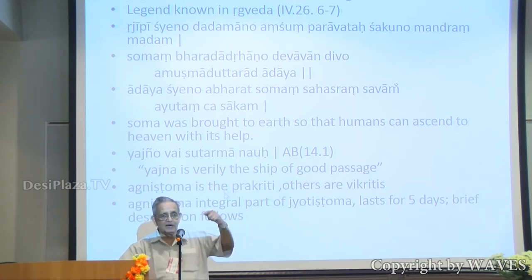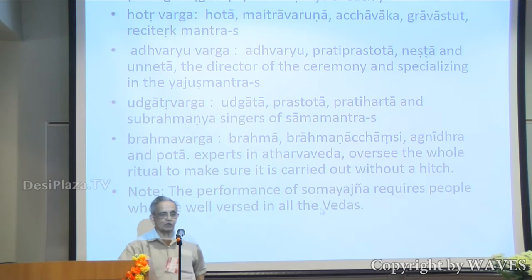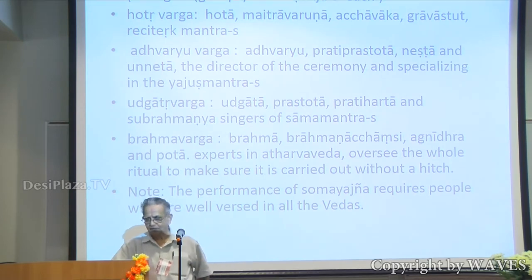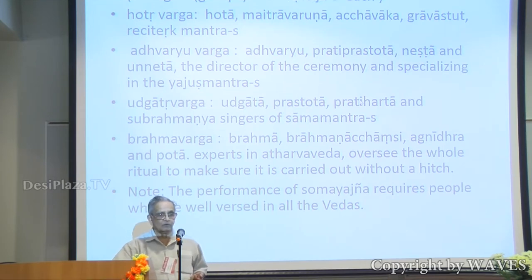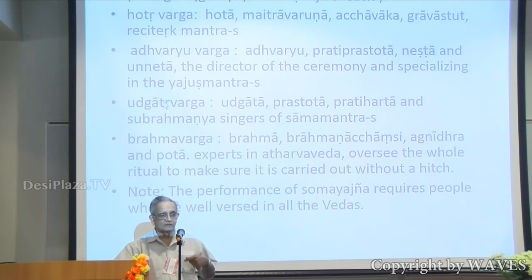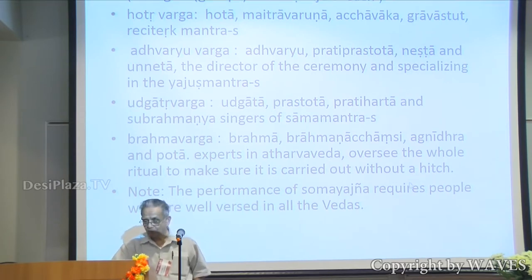Agnishtoma is the prakriti and all the others are vikritis — it is the primary one and the others are variations. Agnishtoma lasts for five days, and sometimes it's called Jyotishtoma; Jyotishtoma and Agnishtoma are equivalent names. In Agnishtoma, there is one ajamana and sixteen ritviks, belonging to four groups: Khotra varga, who recite rig mantras; Adhvaryu varga, who recite yajur mantras; Udgatra varga, who sings sama; and Brahma varga, who oversees to make sure the yajna is carried out without a hitch.